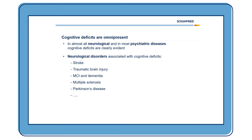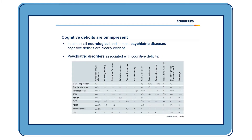But not only neurological disorders are associated with cognitive deficits — psychiatric disorders are as well. Here we can see a meta-analysis from Milan et al. from 2012, and as we can see in this graph, almost all psychiatric disorders like major depression, bipolar disorder, schizophrenia, OCD, and PTSD are associated with cognitive deficits.